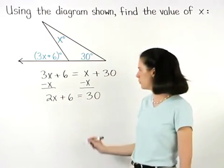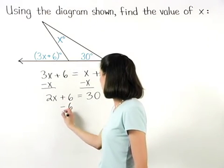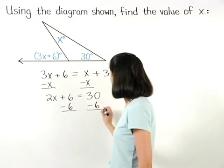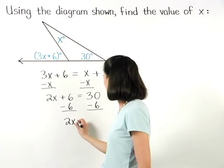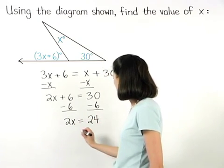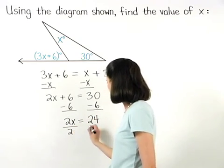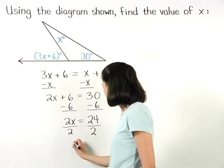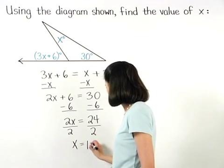Subtracting 6 from both sides gives us 2x equals 24. Dividing both sides by 2, we find that x equals 12.